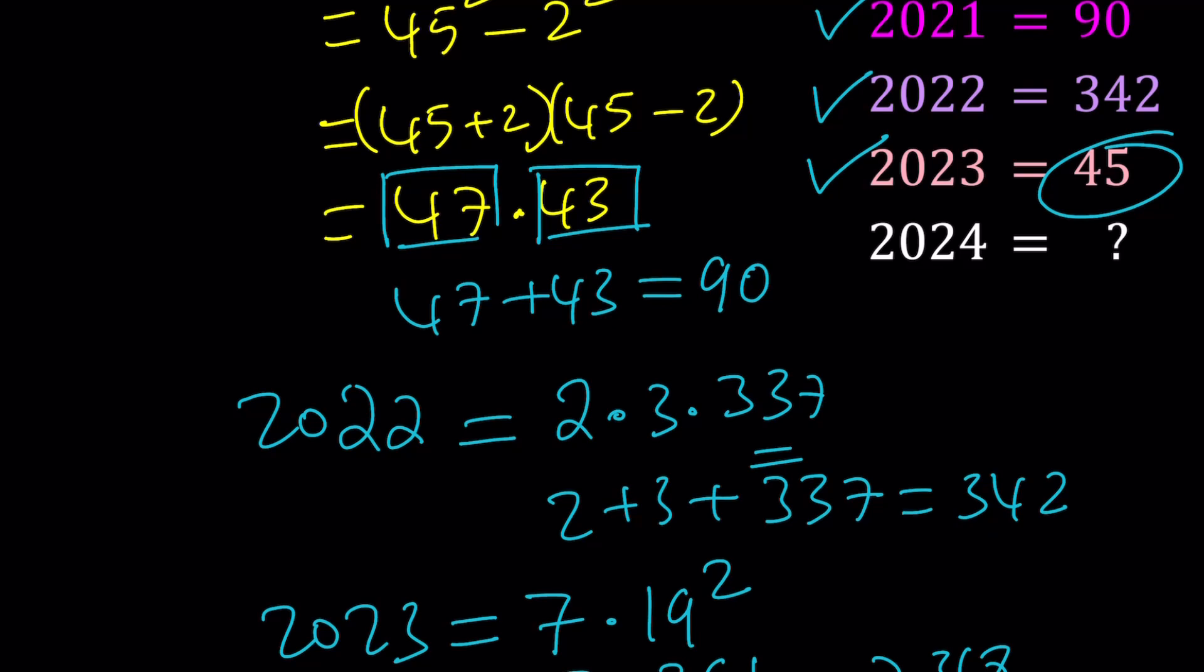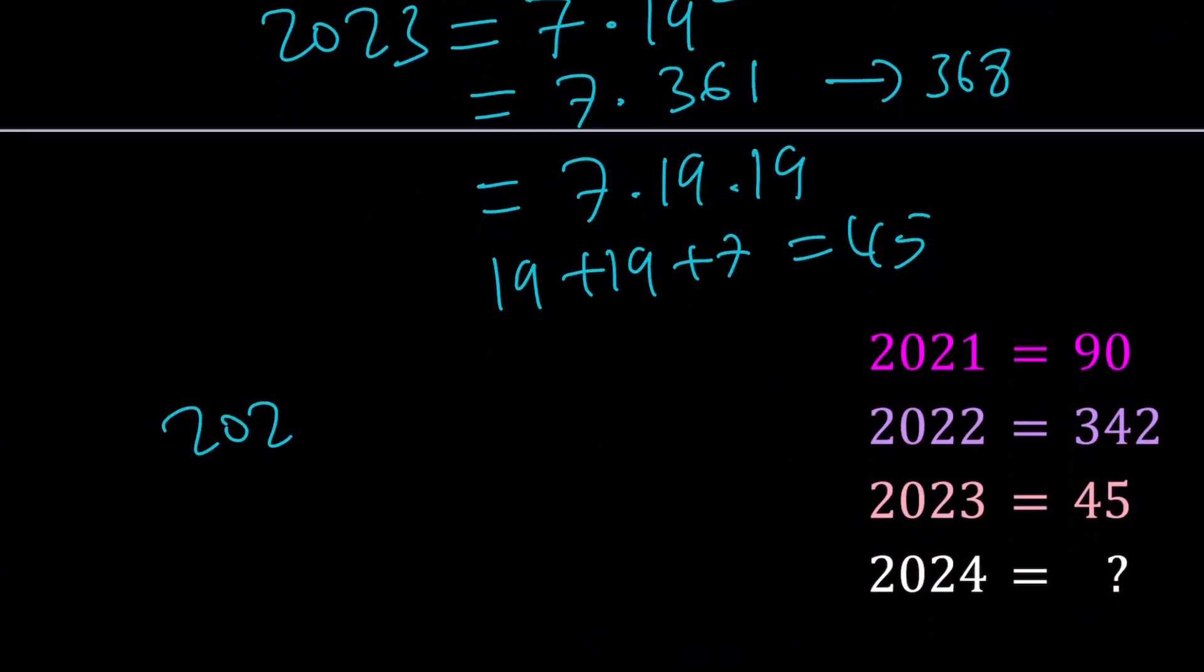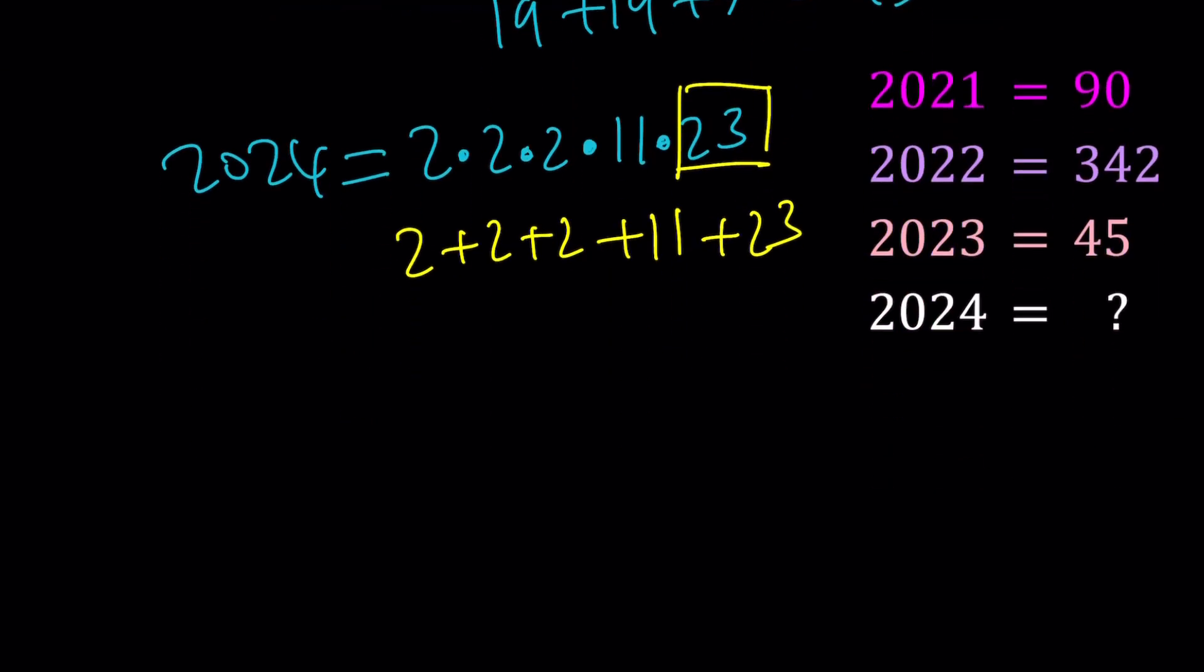In 2024, when you do the prime factorization, did you know it is equal to 2 times 2 times 2 times 11 times 23? Remember, at the very beginning, I told you 2024 is divisible by 23, but it's not divisible. I mean, the 2023 isn't divisible, which I kind of find interesting. Now, if you add these numbers up, 2 plus 2 plus 2 is going to be 6, plus 11 is going to be 17. 17 plus 23 is going to be 40. So 2024 is supposed to equal 40. And that basically concludes our puzzle.